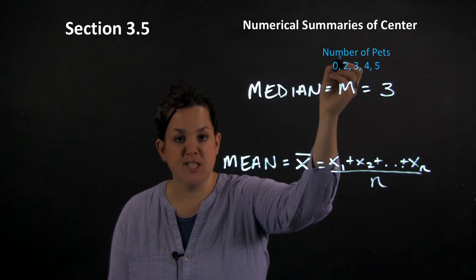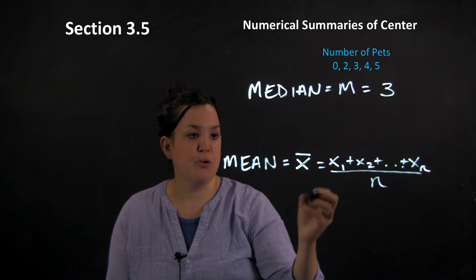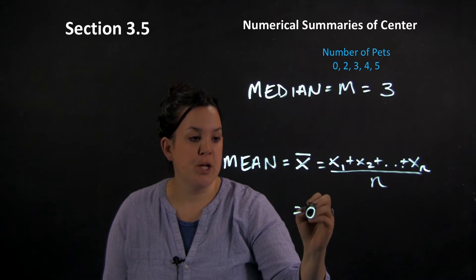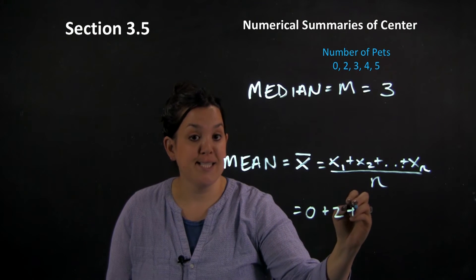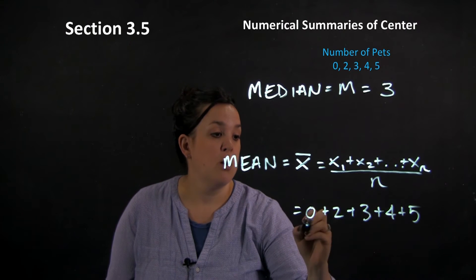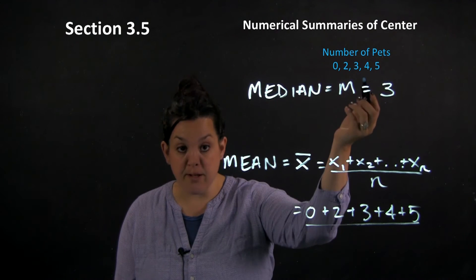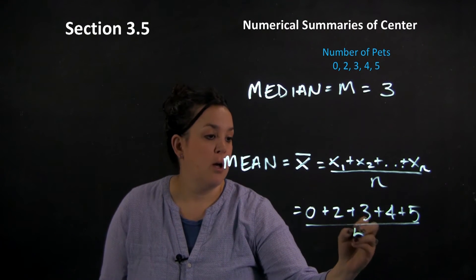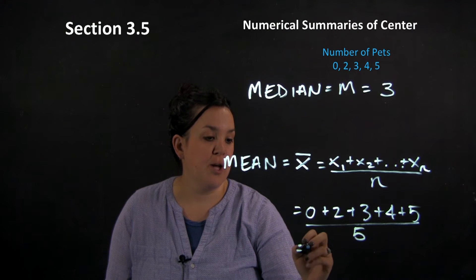X sub 2 is the second location in the data set, so it would be 2. So it just means the location. Now the mean, it does not have to have the data set be put into order. So I don't have to have the data in order. It's not like the median where the data has to be ordered.